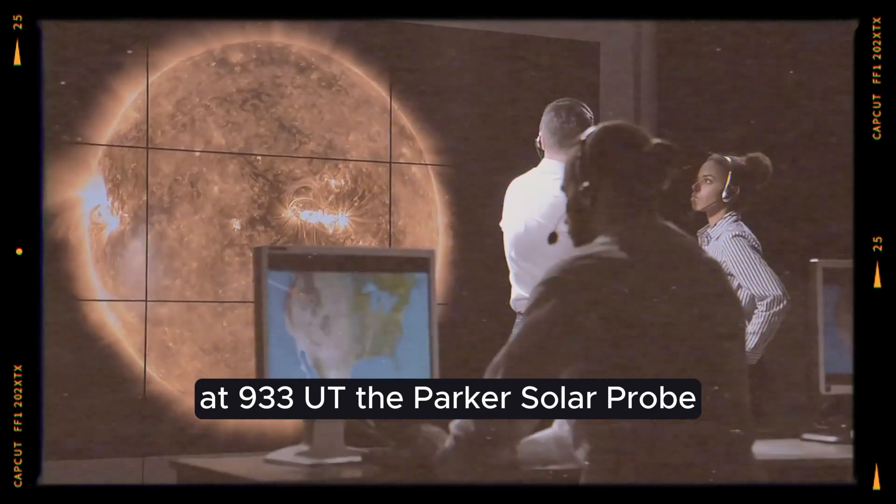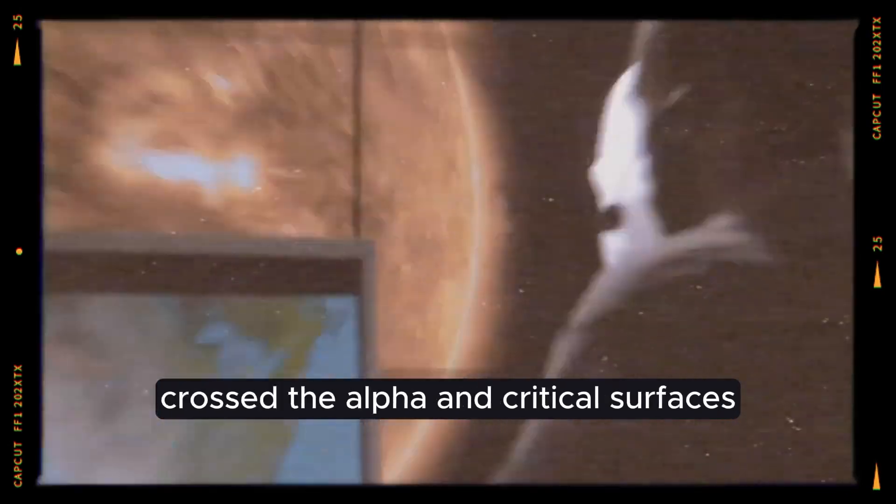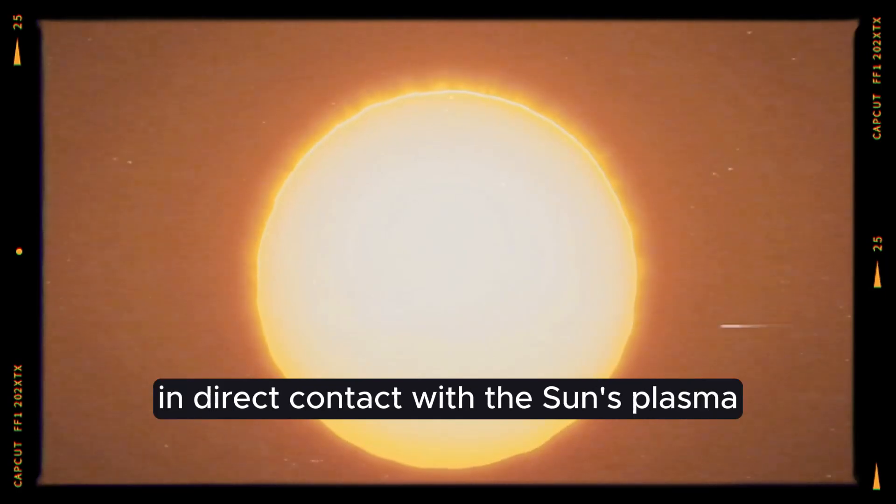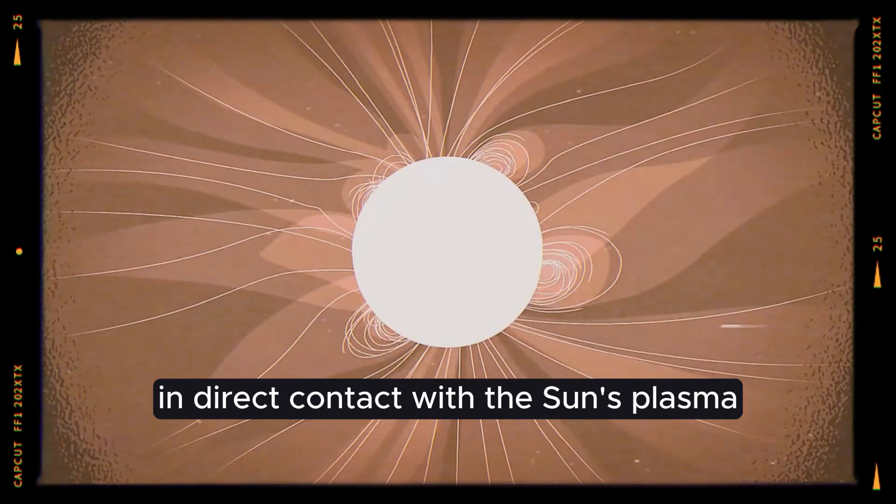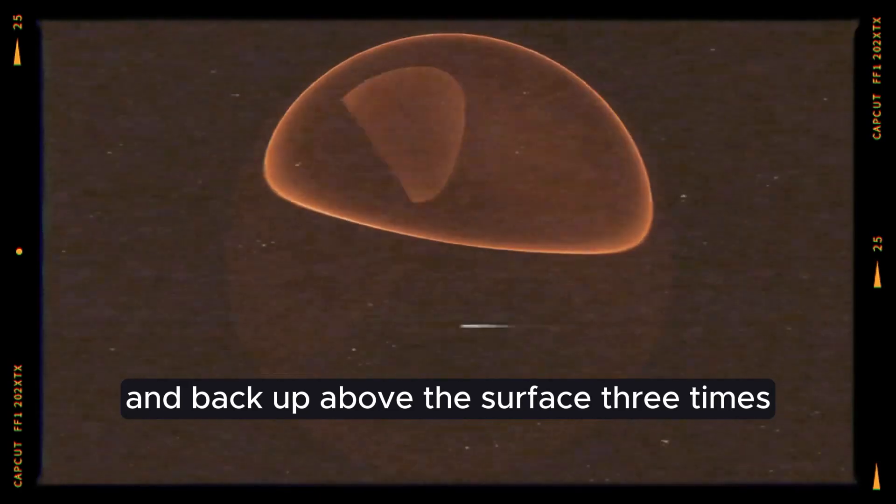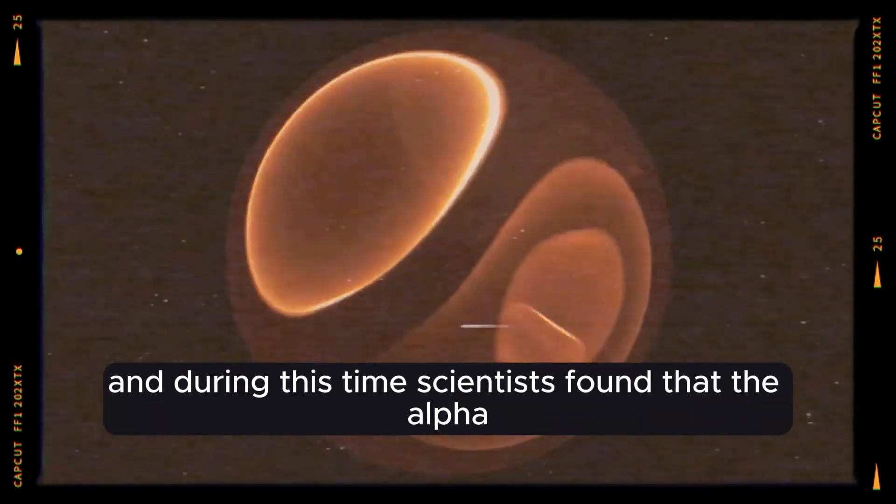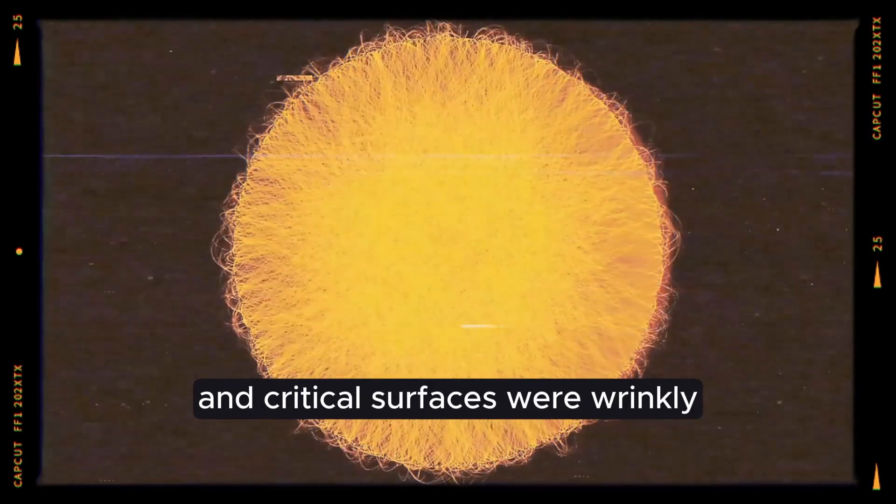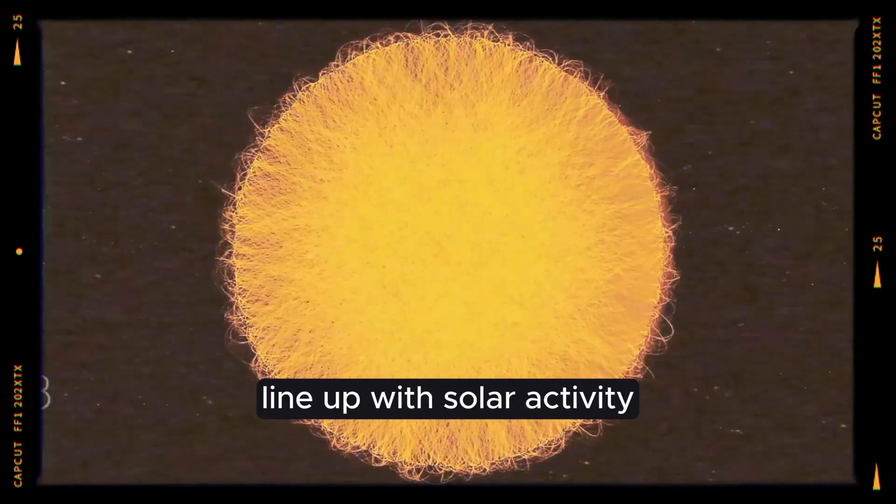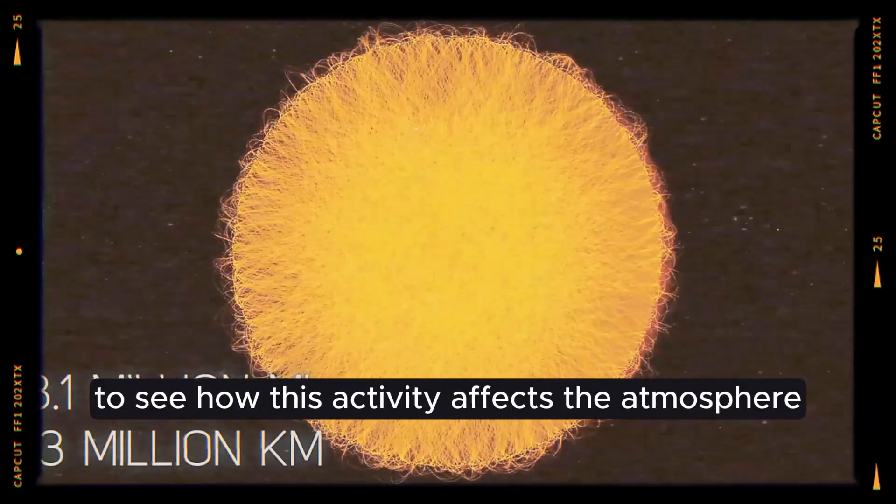At 9:33 UT, the Parker Solar Probe crossed the alpha and critical surfaces and spent five hours below in direct contact with the sun's plasma. The spacecraft went below and back up above the surface three times, and during this time, scientists found that the alpha and critical surfaces were wrinkly. They want to find out how these wrinklings line up with solar activity to see how this activity affects the atmosphere.